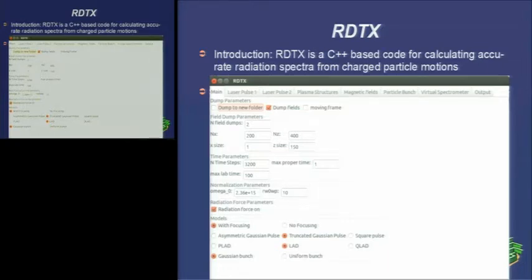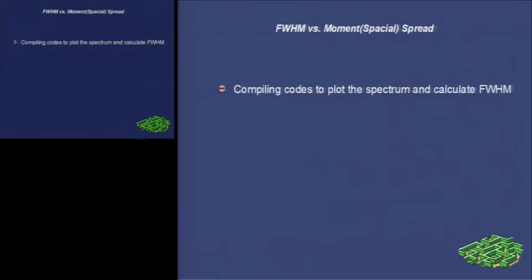Following are some examples. First is the determination of relation between FWHM, which means full width at half maximum, and spatial or momentum spread. Here, all the spread follows Gaussian distribution. In this process, some MATLAB functions are needed to be compiled to generate the FWHM volume and the spectrum.